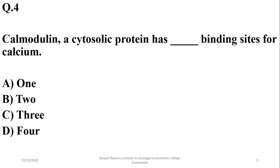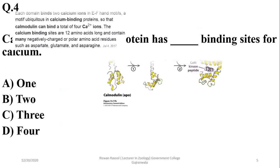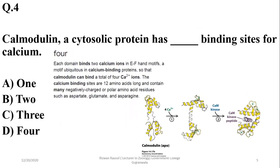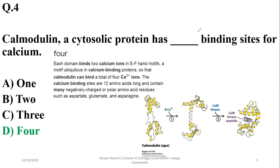Question 4: Calmodulin as a cytosolic protein has how many binding sites for calcium? There are binding sites, but it can bind 4 calcium ions in 2 domains. So according to me the answer will be 4 — there are 2 domains, but calcium ions which can bind are 4. Each domain binds 2 calcium ions. So I think there are 4 binding sites, and D could be the answer.